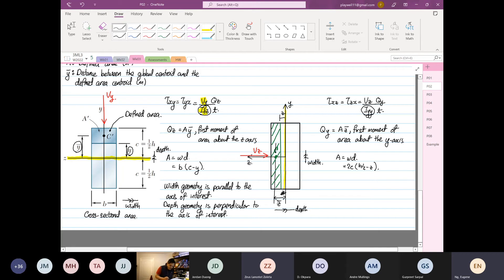So a very important thing to look at is the width geometry is parallel to the axis of interest. So what it means is if any geometry... Let's look at Z. This geometry is parallel. It's going to be the width. And then if you look at YY, this geometry is parallel to the axis. It is the width.